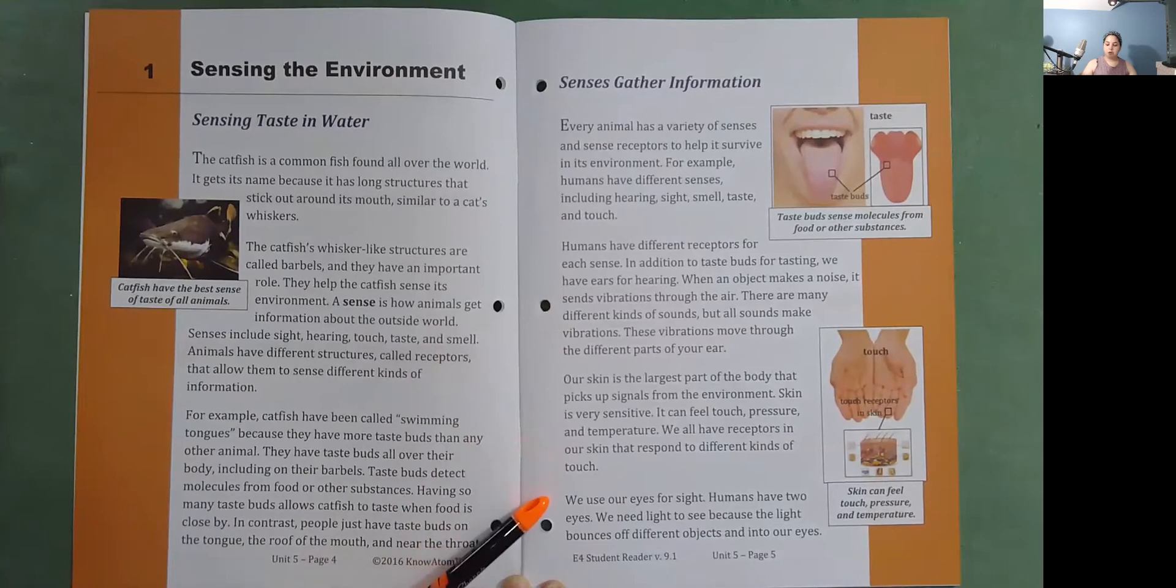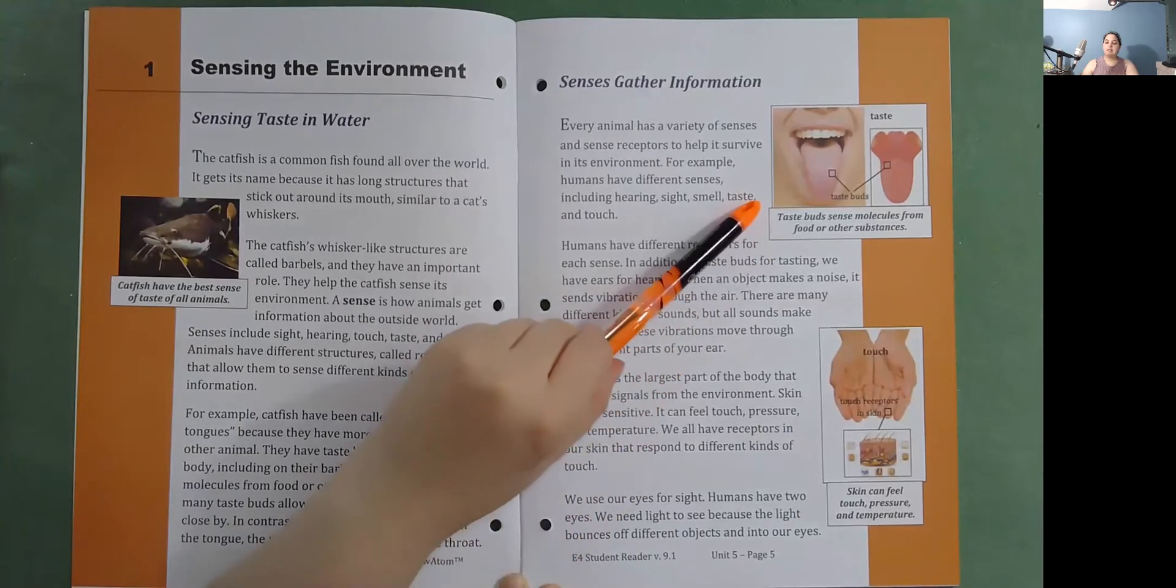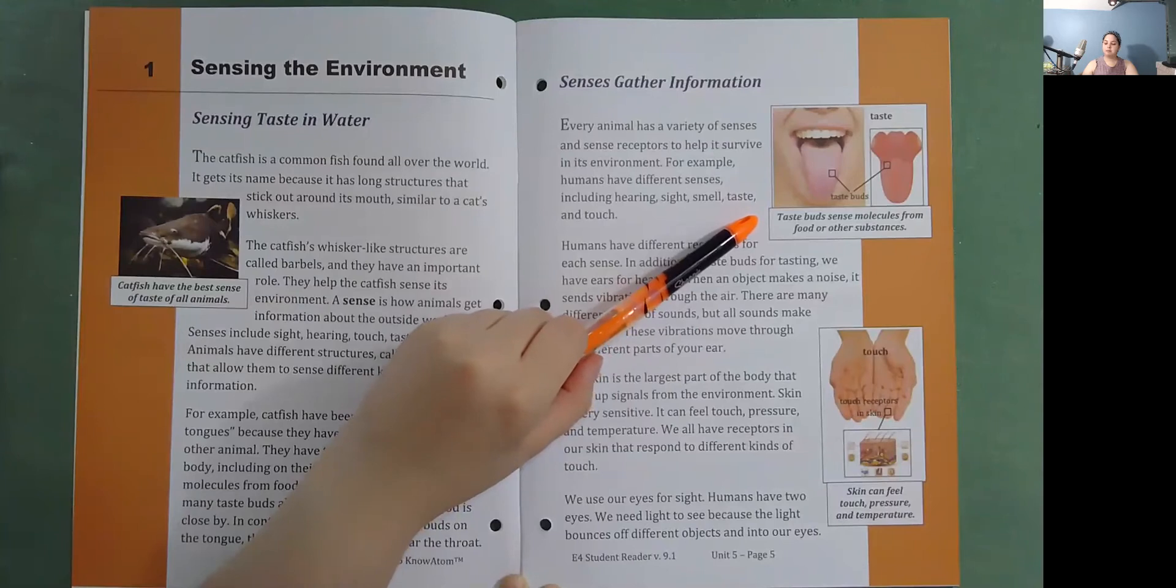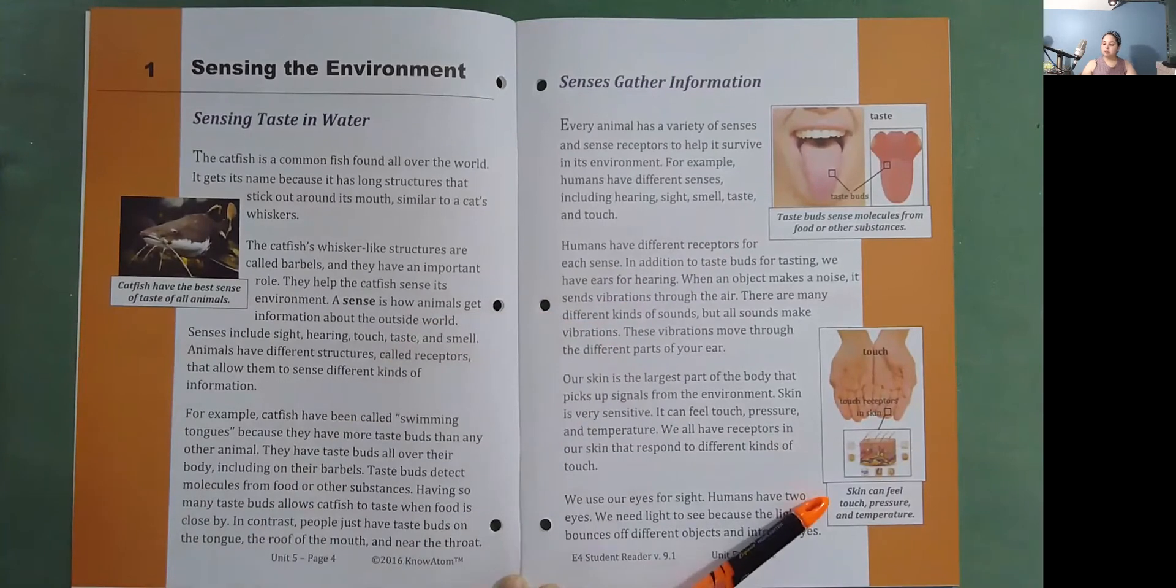We use our eyes for sight. Humans have two eyes. We need light to see because the light bounces off different objects and into our eyes. Taste buds sense molecules from food or other substances. Skin can feel touch, pressure, and temperature.